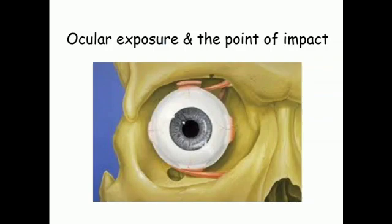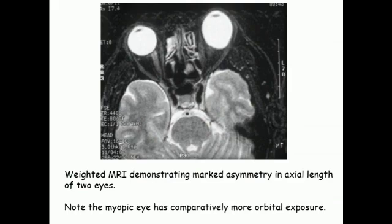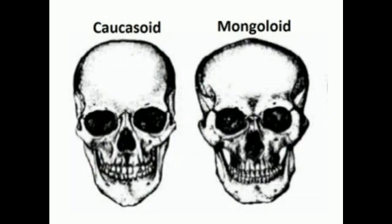Ocular prominence depends on refraction — myopic eyes tend to have a comparatively larger axial length, so a myopic eye is always more susceptible to injury. The orbital bones and orbital cavity play an important role in protecting the eye. A mongoloid face — a combination of a smaller orbital bone with a flatter face — is commonly associated with myopia. This combination of smaller orbital bone, flatter face, and myopia increases the risk of orbital exposure and eye injury in sports.